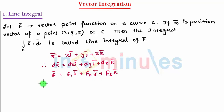If I define this, then we can say integration F̄ · dr̄ over integral C can be given as f₁dx + f₂dy + f₃dz. That's my line integral.